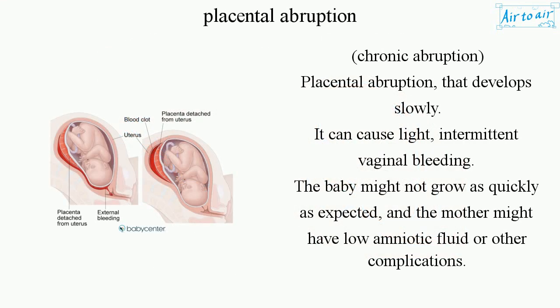Chronic abruption is placental abruption that develops slowly. It can cause light intermittent vaginal bleeding. The baby might not grow as quickly as expected, and the mother might have low amniotic fluid or other complications.